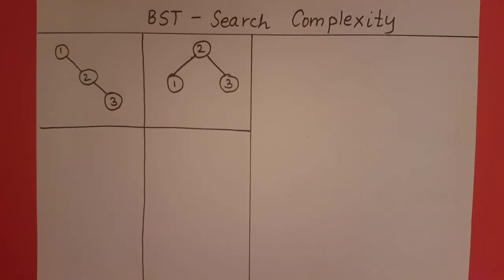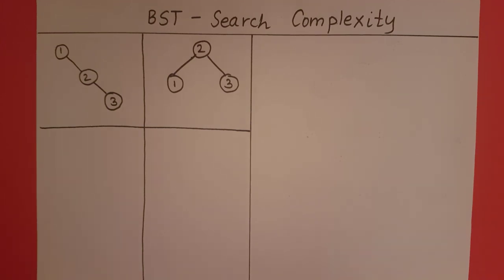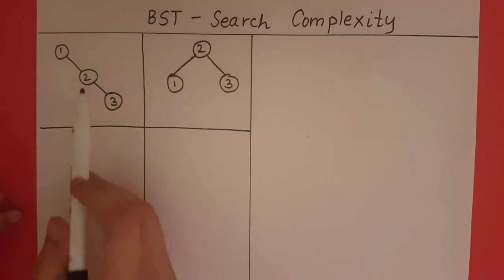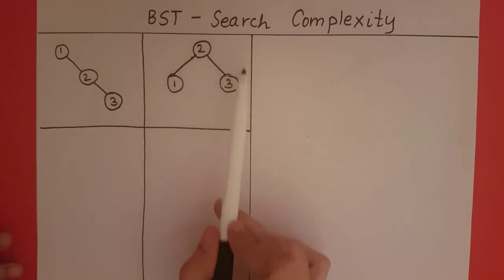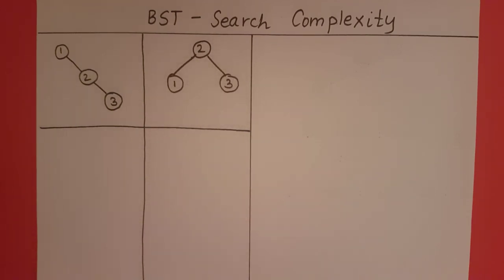First, let's think about what could be the best case for this algorithm. The best case scenario of a search would be if the first element that we check is equal to the value we are searching for. The first node we check is the root node. So if we are searching for one in the first tree, it will return immediately. If we are searching for two in the second tree, it will check the root node and return immediately.